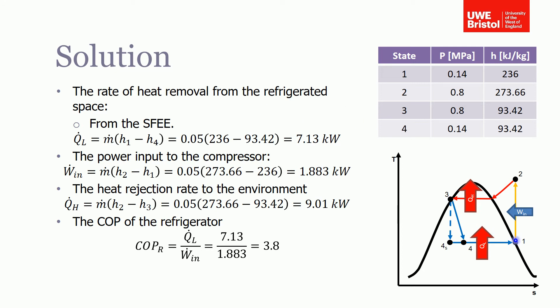Going from 4 to 1, we've got no work done, it's only heat supplied. In this question we're working with total quantities, not specific quantities. So we multiply everything by the mass flow rate to get the total answer. So the heat removed from the space equals the mass flow rate times the change in enthalpy, which gives you an answer of 7.13 kilowatts.